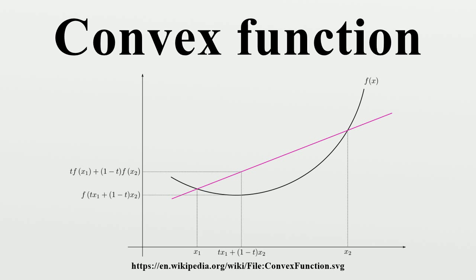Visually, a twice-differentiable convex function curves up without any bends the other way. If its second derivative is positive at all points then the function is strictly convex, but the converse does not hold. For example, the second derivative of f(x) = x⁴ is 12x², which is zero for x equals zero, but x⁴ is strictly convex. More generally, a continuous twice-differentiable function of several variables is convex on a convex set if and only if its Hessian matrix is positive semi-definite on the interior of the convex set.